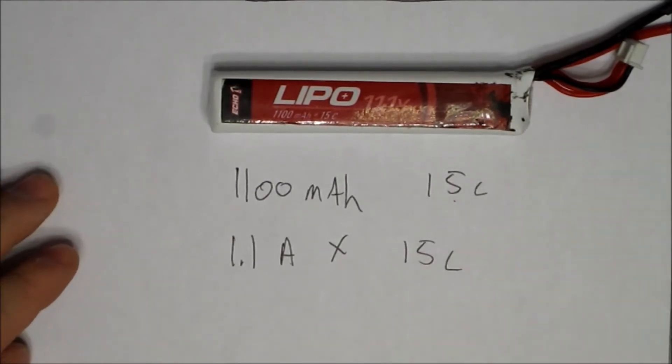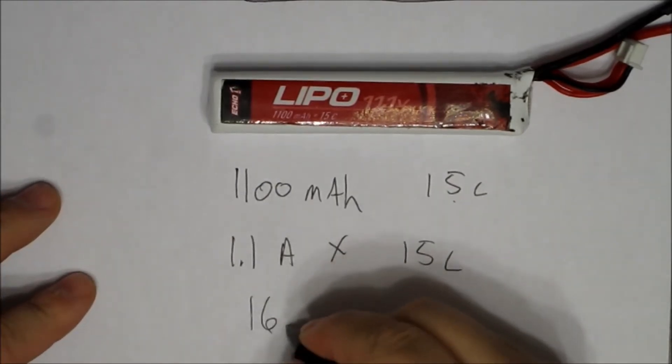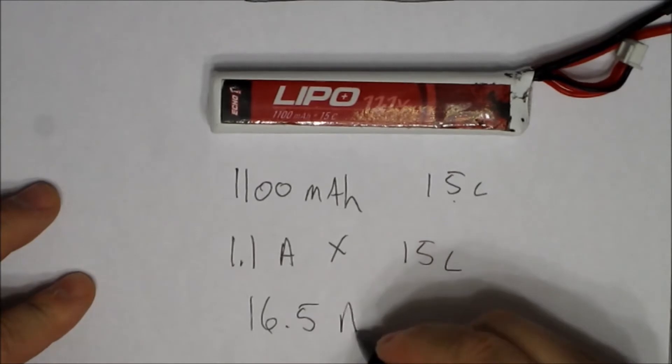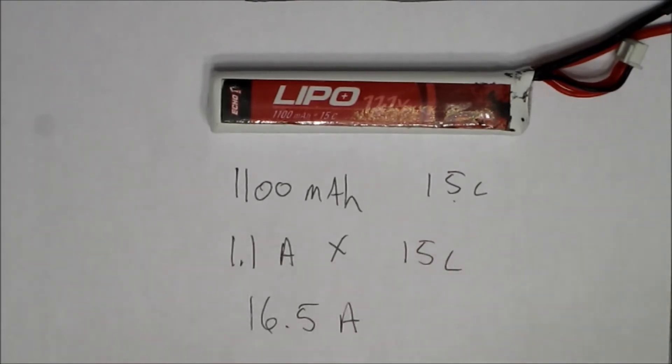Which equals 16.5 amps. So this means that you can safely draw up to 16.5 amps continuously from this 11.1 volt LiPo without doing any damage to your battery.